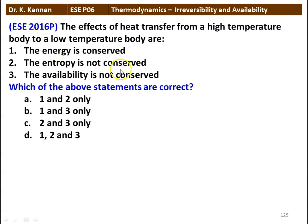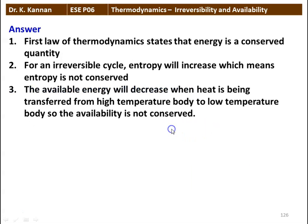Next question: the effects of heat transfer from a high temperature body to a low temperature body are: (1) energy is conserved, (2) entropy is not conserved, and (3) availability is not conserved. All three statements are correct. The first law of thermodynamics states that energy is a conserved quantity. For an irreversible cycle, entropy increases, meaning entropy is not conserved. The available energy decreases when heat is transferred from a high temperature body to a low temperature body, so availability is not conserved.